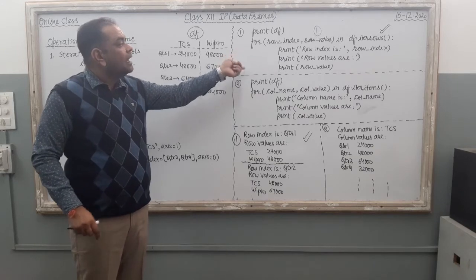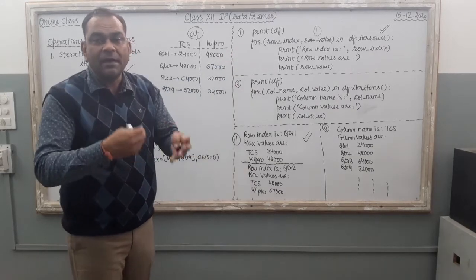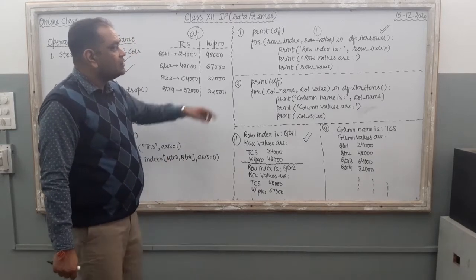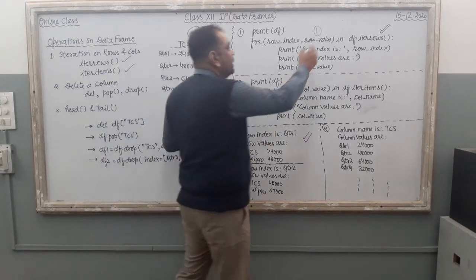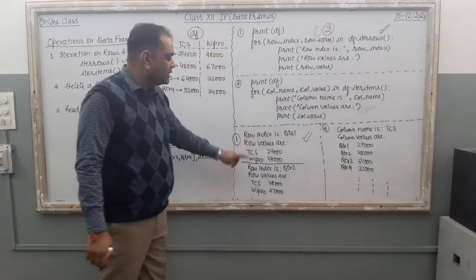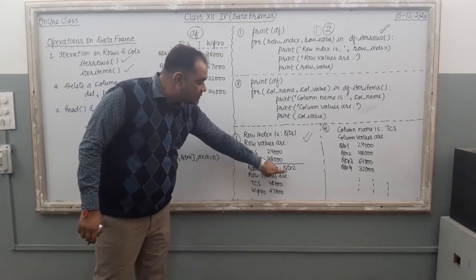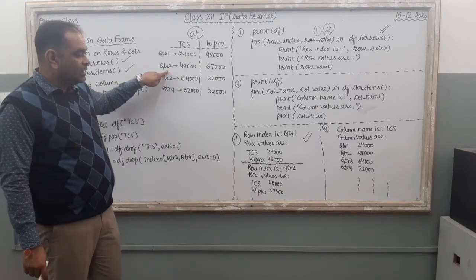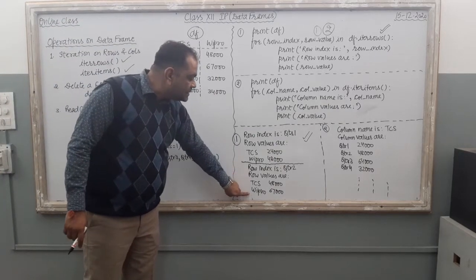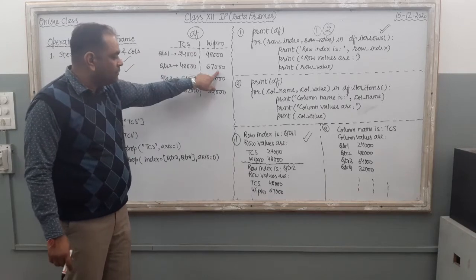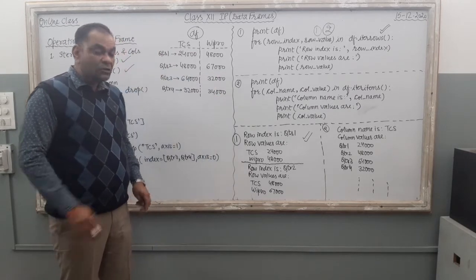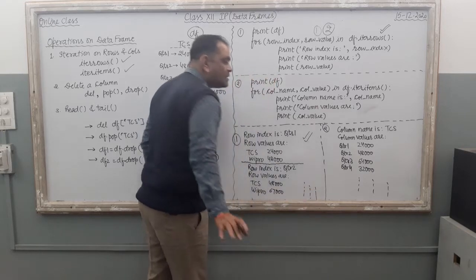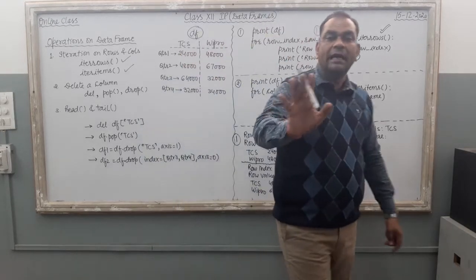The for loop is a repeated instruction. When the for loop executes a second time, the result is row index is Quarter 2. The second row will be there — row values are TCS: 48,000 and Wipro: 67,000. The for loop will show each and every row of your DataFrame.